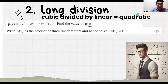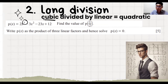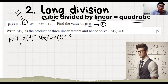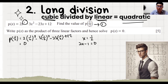After Factor Theorem and Remainder Theorem, one more technique is Long Division. If a cubic equation is divided by a linear equation, you get a quadratic. This question asks us to find the value of p(½). We substitute and get 0, so we can confirm that x equals to half is a root, which means 2x minus 1 is one of the factors.